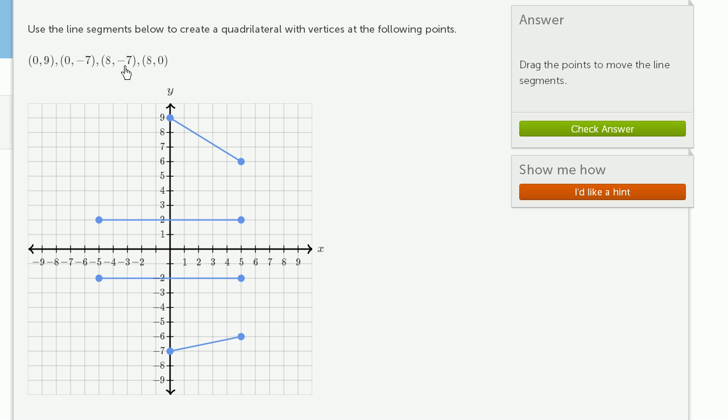Then we have (8, -7). So (8, -7) is right over here. It feels like this might be the right edge, so I'll put its other point right at (8, -7).